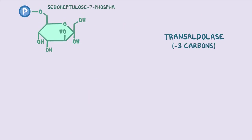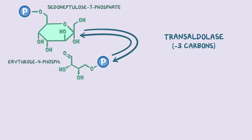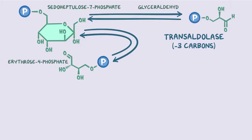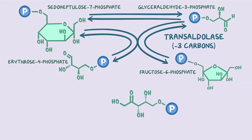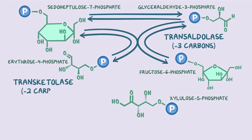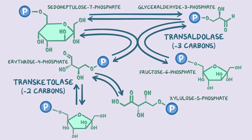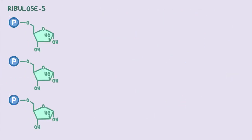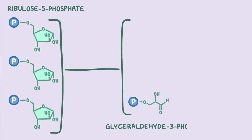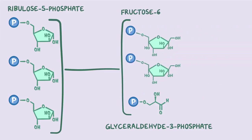Transaldolase comes in and removes three carbons from sedoheptulose-7-phosphate, turning it into a 4-carbon molecule called erythrose-4-phosphate. The three carbons go to glyceraldehyde-3-phosphate, making the 6-carbon fructose-6-phosphate. If there's another xylulose-5-phosphate around, transketolase can jump in and remove two carbons from it, giving them to erythrose-4-phosphate, to make another fructose-6-phosphate molecule. So processing three ribulose-5-phosphate molecules can yield one glyceraldehyde-3-phosphate and two fructose-6-phosphates.